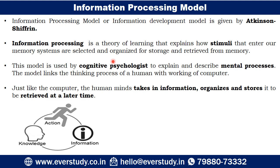The Information Processing Model is also called the Information Development Model. It is given by the famous psychologist Atkinson and Shiffrin. It is a learning theory that explains how stimuli enter our memory system — only those stimuli to which we pay attention enter. After that, we select that information, organize it, store it, and then retrieve it. This model is used by cognitive psychologists; the word cognitive basically means mental action, or when you are consciously involved in something.